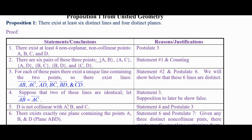We start with the first statement: there exist at least four non-coplanar, non-collinear points. Let's go ahead and give them names A, B, C, and D. That's just a restatement of Postulate 3.